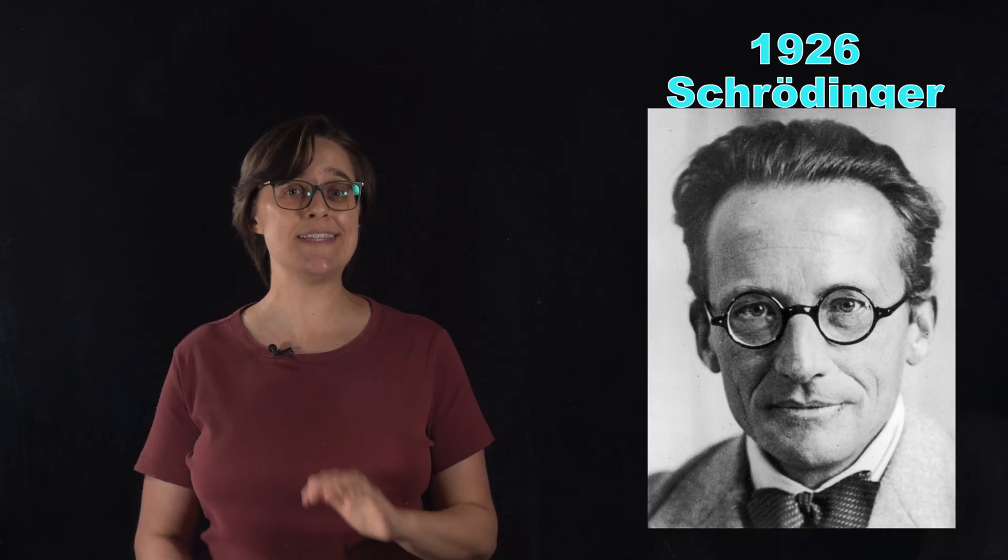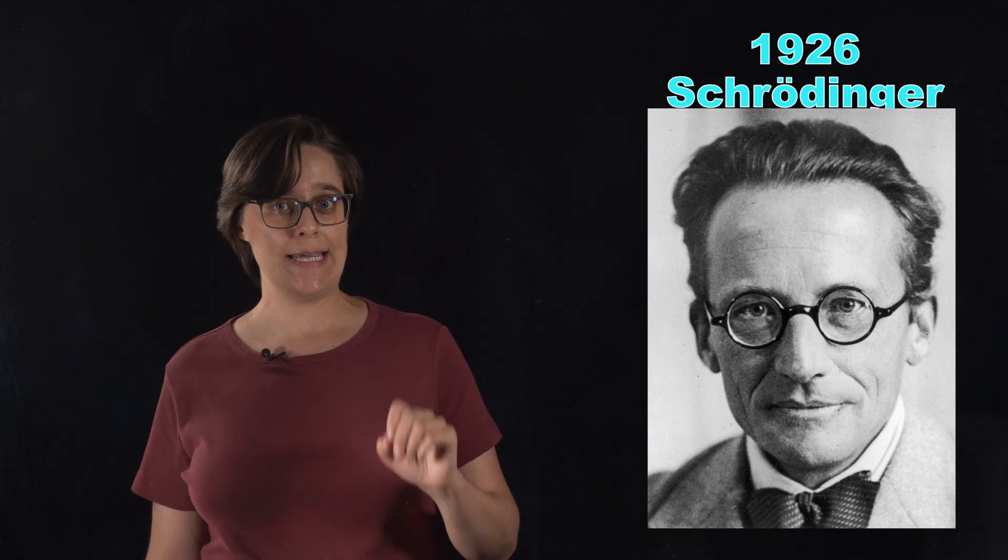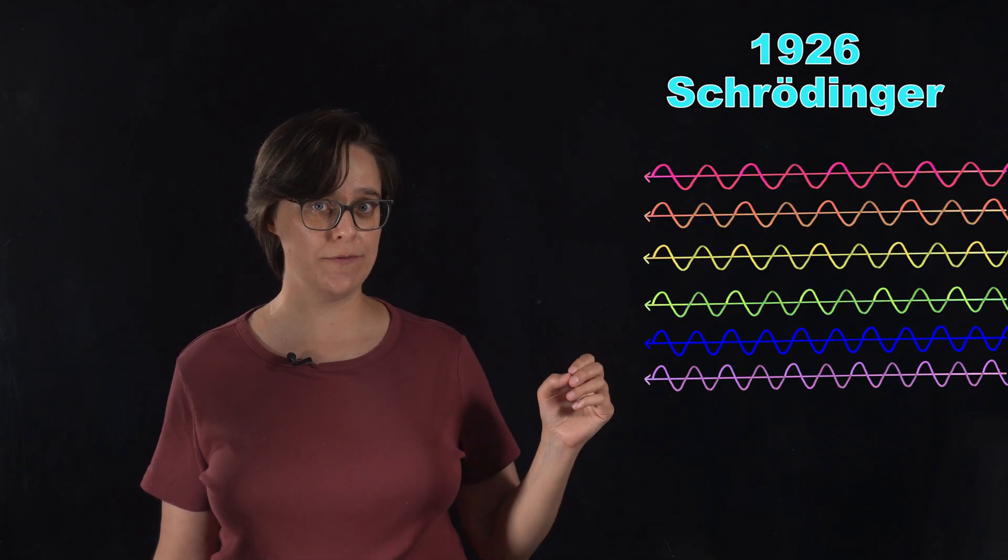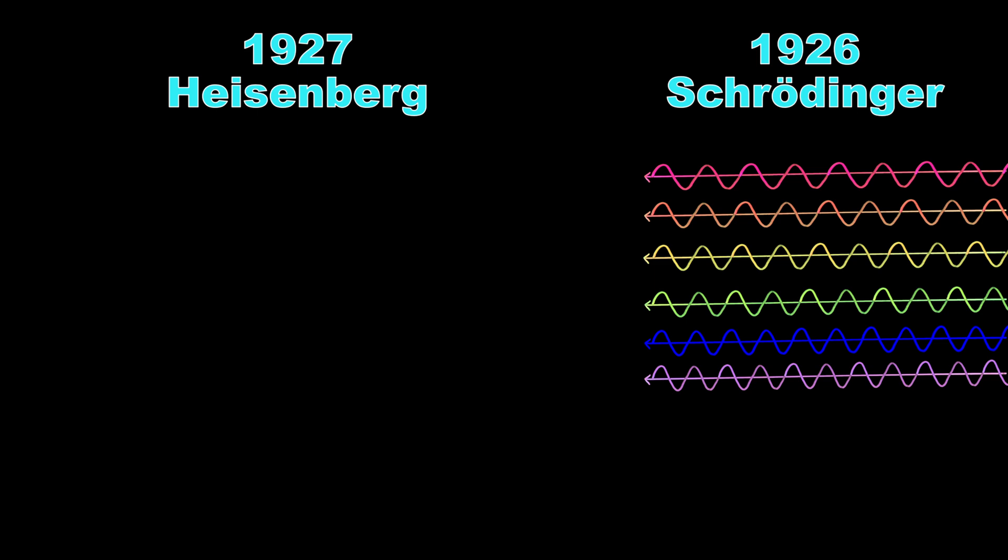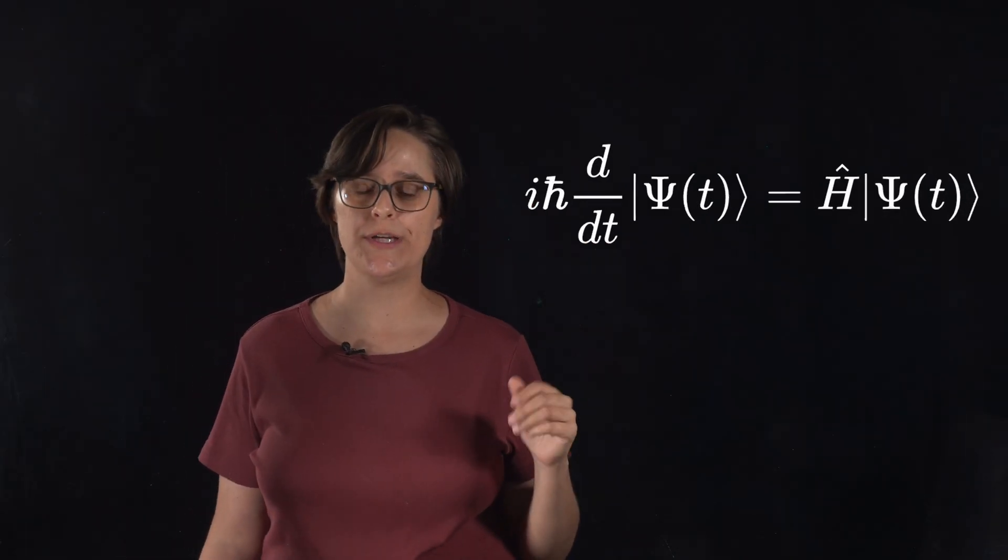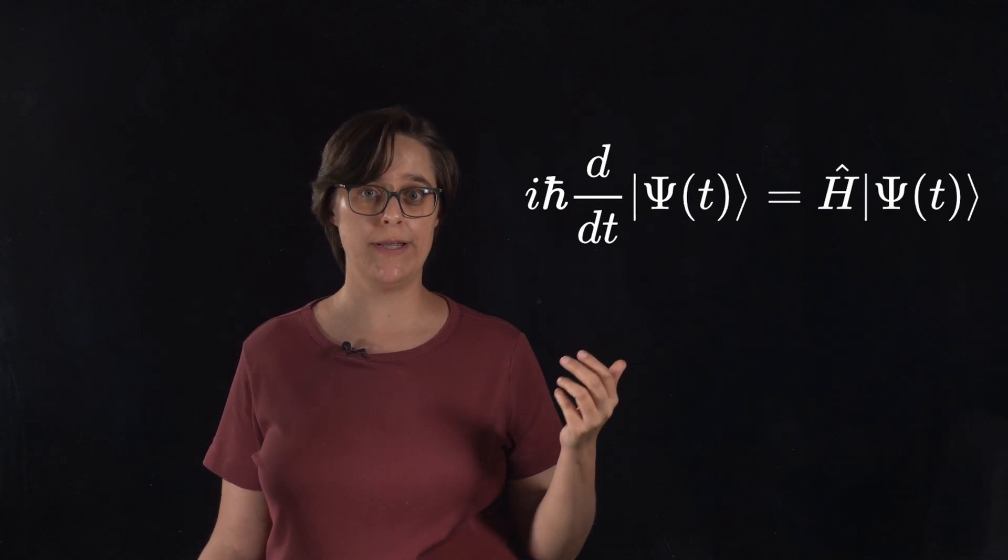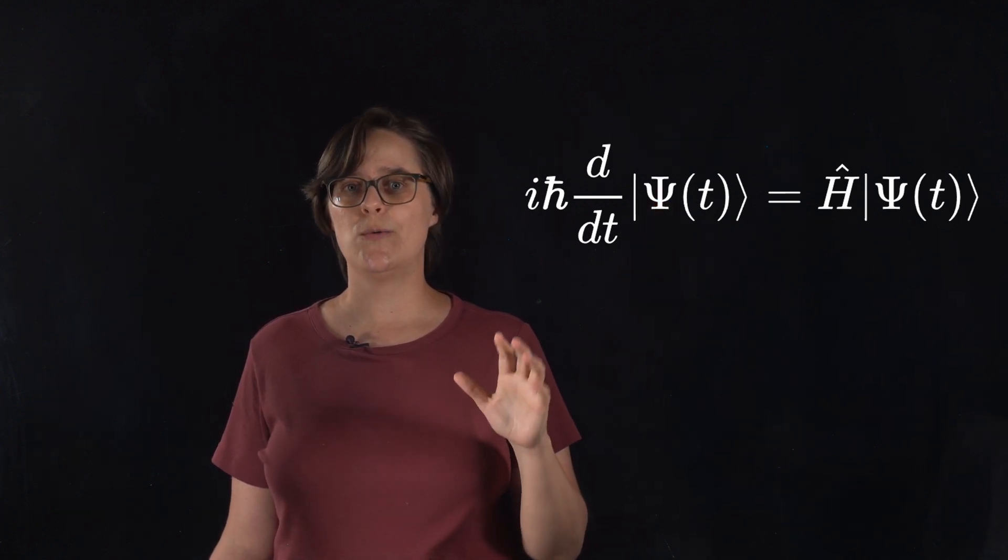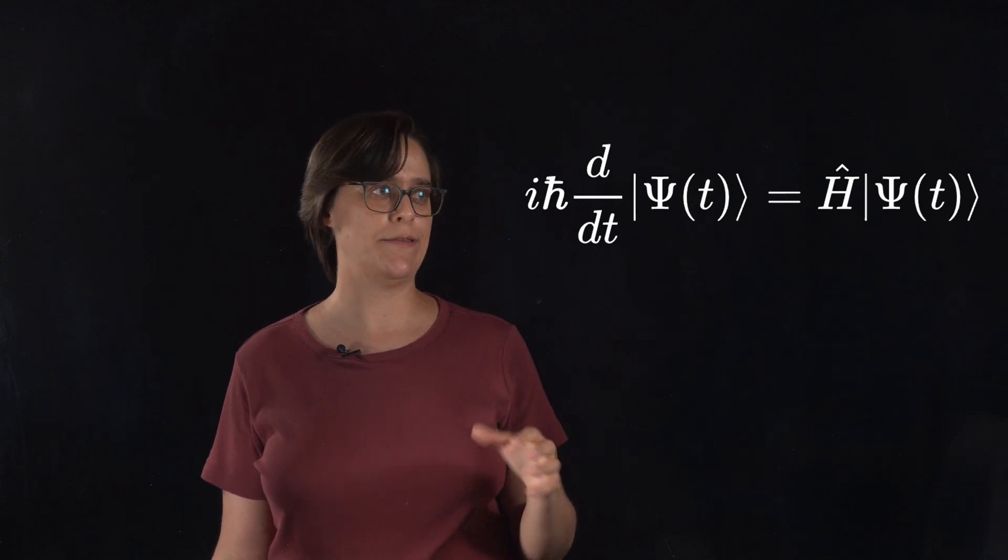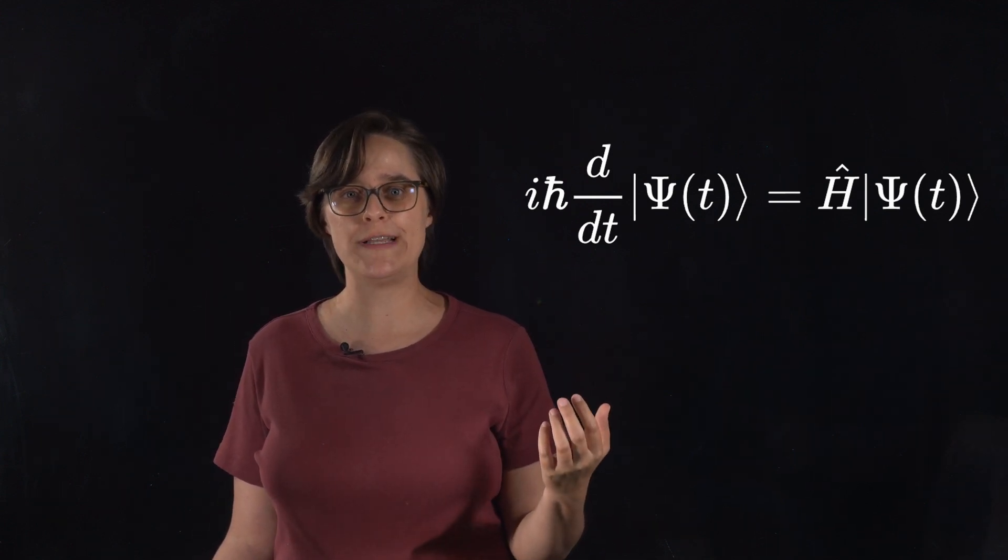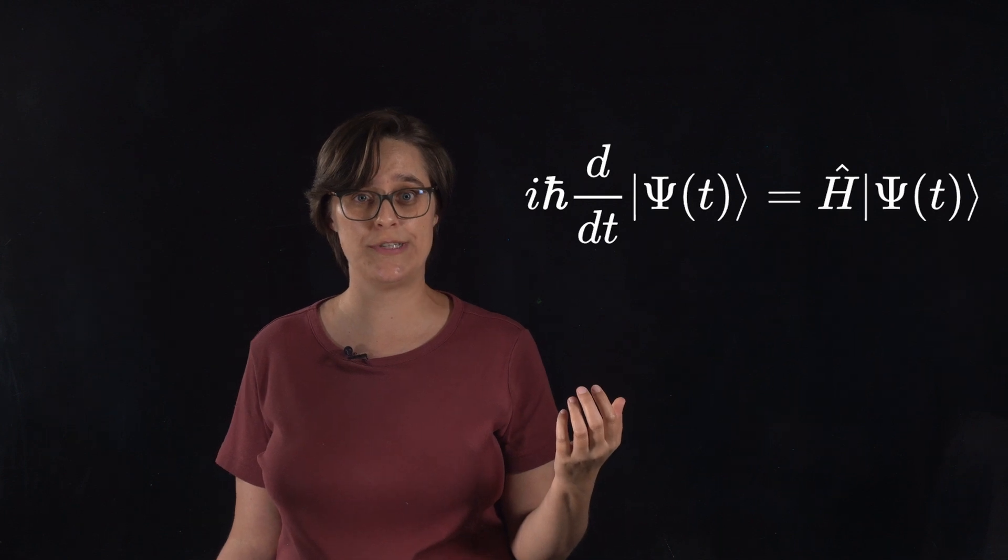In 1926, Erwin Schrödinger approached this same problem differently. He treated electrons as waves, where Heisenberg had treated them as particles. He developed the Schrödinger equations, which describe the behavior of electrons as wave functions. Now, let's skip over all the math, and just get an intuitive feeling for what the Schrödinger equations are saying.